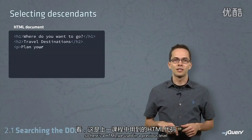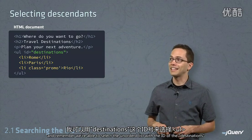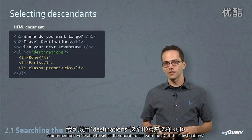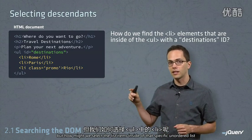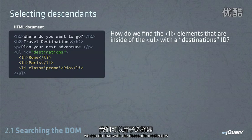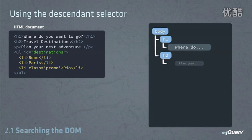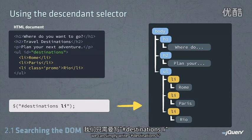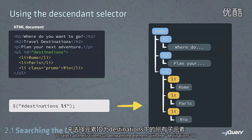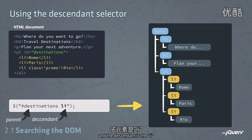Here's the HTML we used in our previous level. Remember, we were able to select the unordered list with the ID of destinations. But how might we select the list items inside of that specific unordered list? We can do that using the descendant selector. We can simply write #destinations li to select all the list items underneath the element with the destinations ID. The parent is destinations, and the descendant is the li.